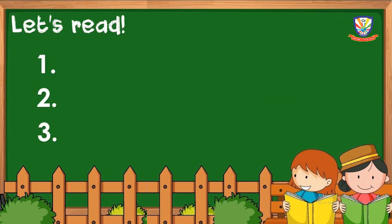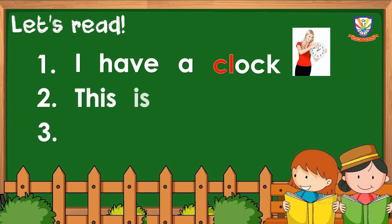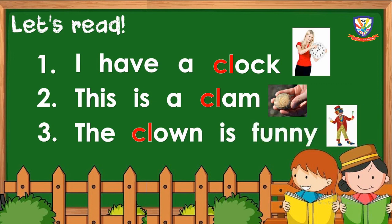Now let's read sentences, starting from number one. Number one. Number two: This is a clam. Number three: The clown is funny. Good job, everyone!